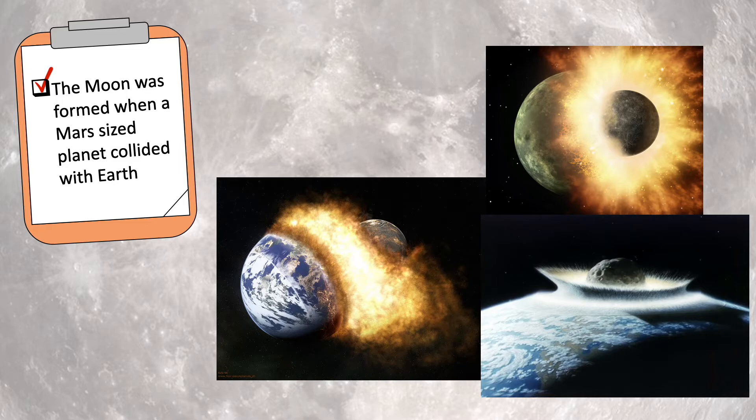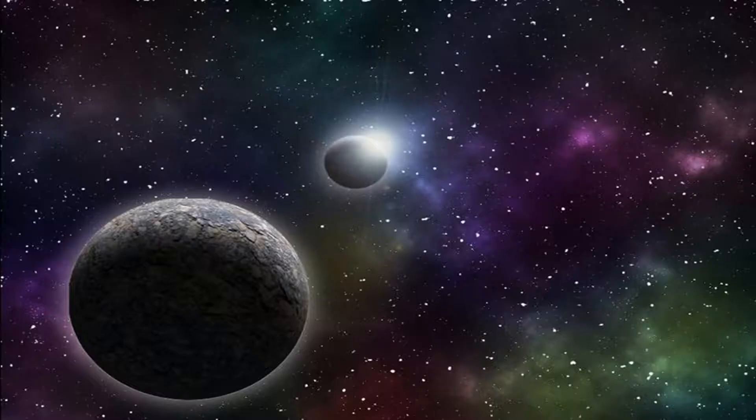The moon is in synchronous rotation with earth. That means we always see the same side — the near side of the moon — from our position on earth.